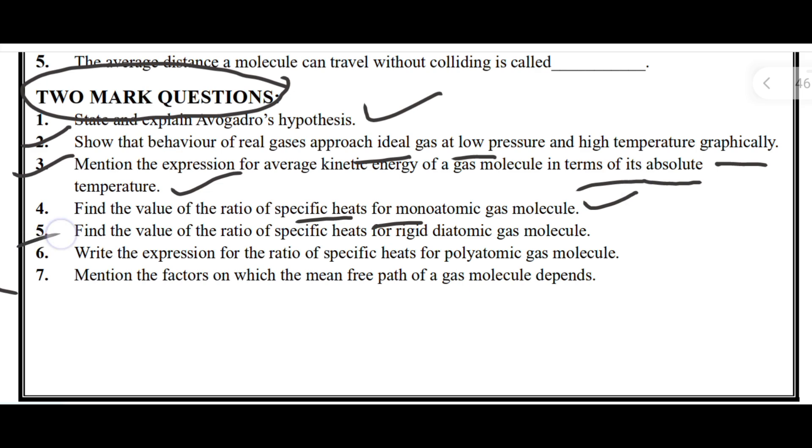Fourth, find the value of the ratio of specific heats for monoatomic gas molecules. Fifth, find the value of the ratio of specific heats for rigid diatomic gas molecules. Sixth, write the expression for the ratio of specific heats for polyatomic gas molecules. Seventh, mention the factors on which the mean free path of a gas molecule depends. These are all important two-mark type questions from kinetic theory.